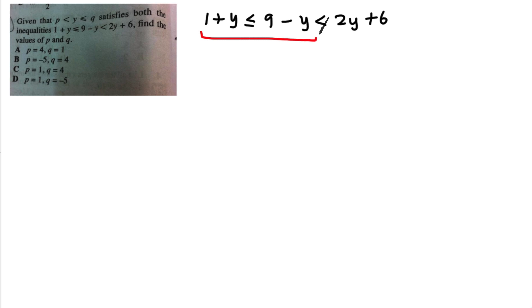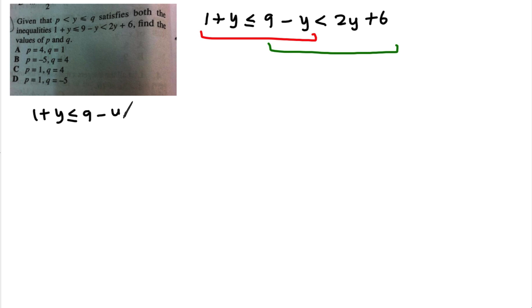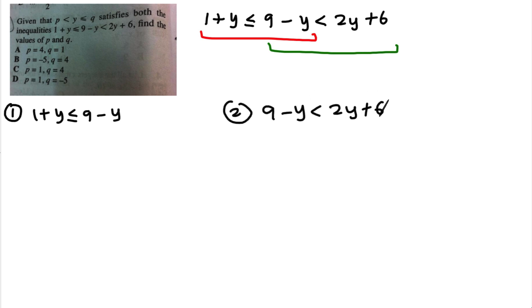In order to find p and q, you must try to make this into the form p < y ≤ q. So we need to solve this inequality. I will write out the equation: 1 + y ≤ 9 − y, and then less than 2y + 6. When you solve an inequality like this, you have to solve it separately — I will solve the red one first, which is 1 + y ≤ 9 − y, and then the second one: 9 − y < 2y + 6.